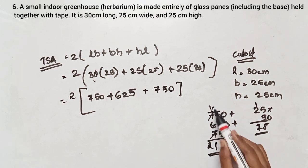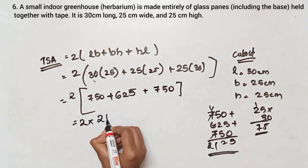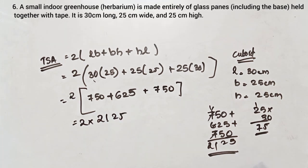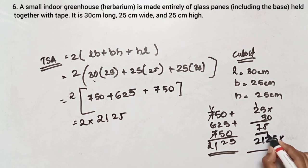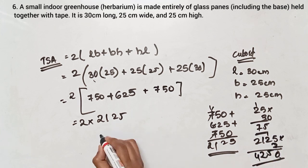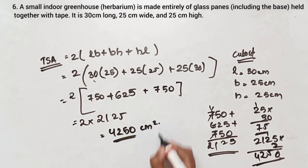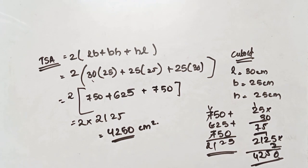This works out to 2 into 2125, which gives 4250 cm squared. So the total surface area of the cuboid is 4250. Wait — the total surface area of the cube is 600 cm squared and the cuboid total surface area result is used for comparison.